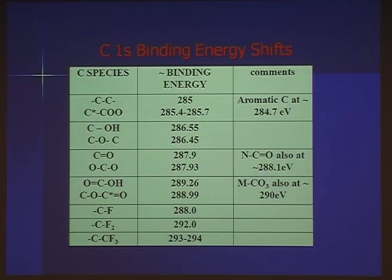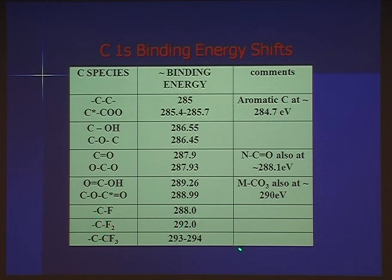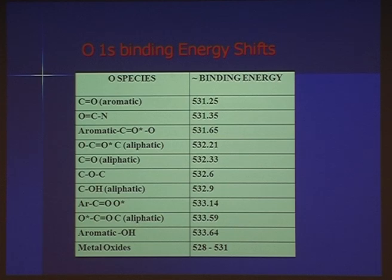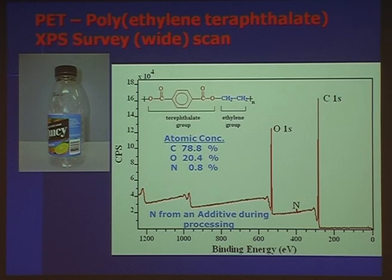Here are tables of binding energy shifts. For carbon, the C-C bond comes in around 285 eV. Carbons near a carboxyl group shift a little; C-O shifts about 1.5 eV, putting it around 286.5; C=O is around 288 eV. If you go up to CF2 as in Teflon, it's around 292 eV; CF3 is around 294 eV — very strong bond between carbon and fluorine. For oxygen 1s, metal oxides come in around 531 eV, with other species in the middle. Oxygen in general is not a good indicator because there's not a big change in shift and it's not so easy to resolve the oxygen 1s.